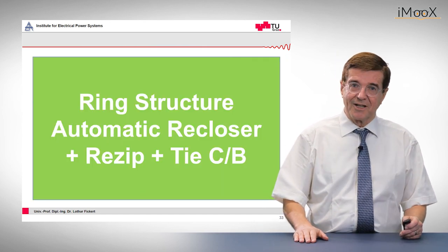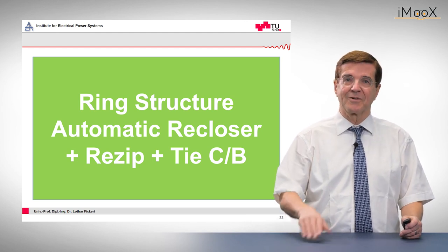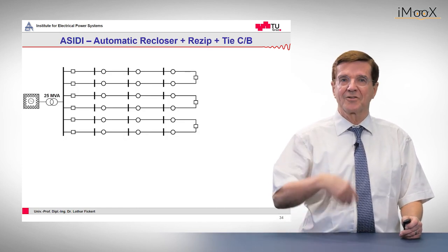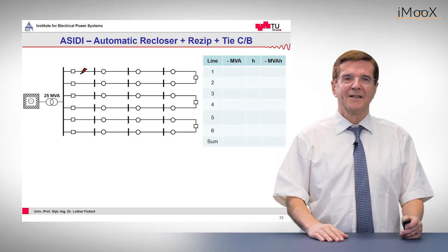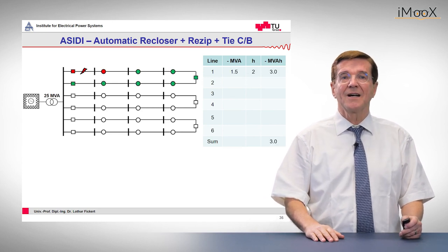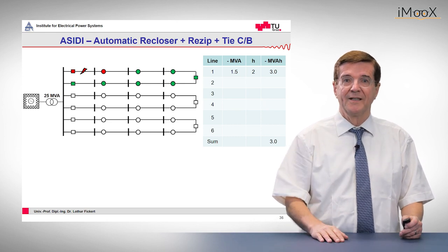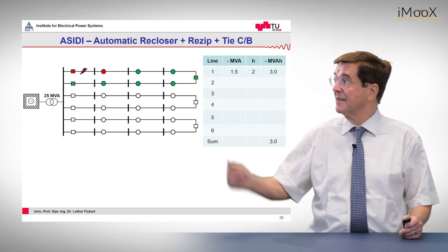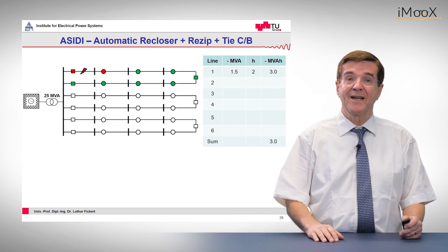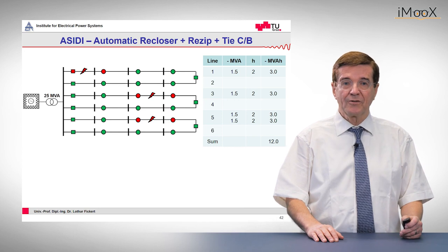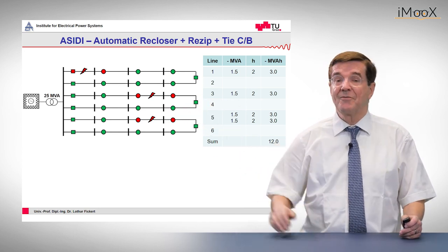The last structure I would like to show is a ring structure with automatic re-closers and a tie circuit breaker. Here we can see what happens in the course of the same year repeated again. Fault number one on feeder number one in the first half: because of the re-close principle we lose only one bus bar, which is 1.5 MVA for 2 hours, and altogether per event it is minus 3 MVA hours. The same happens with the second, third, and fourth fault, and altogether we have lost minus 12 MVA hours.